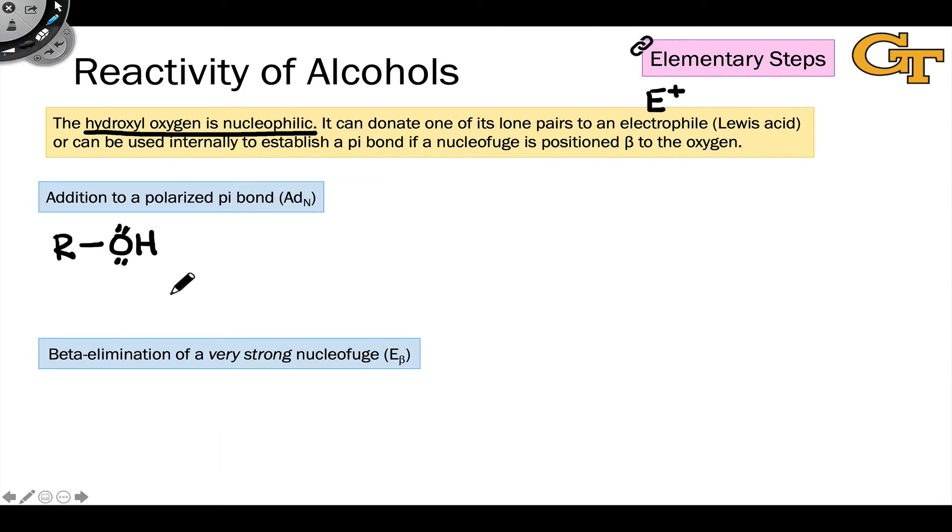So far, we've looked at examples of the hydroxyl oxygen acting as a nucleophile toward empty atomic orbitals, as well as sigma-star antibonding orbitals. The last one that remains is the pi-star electronic acceptor, and this corresponds to addition across a polarized pi bond, or the ADN step.